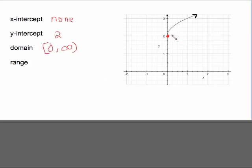The range is going to begin right here. The lowest y value is two and it continues forever and ever height wise. So it's also infinity and it has a square bracket.